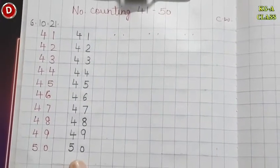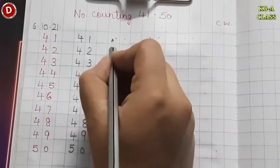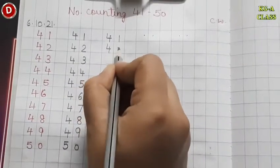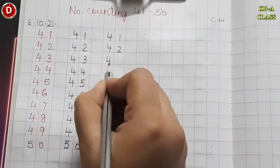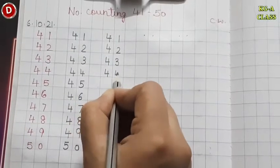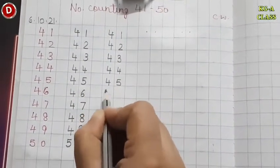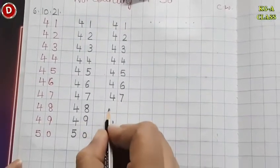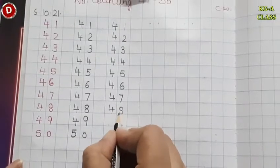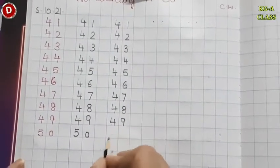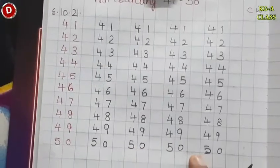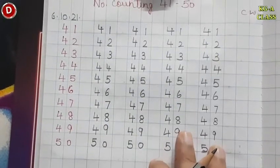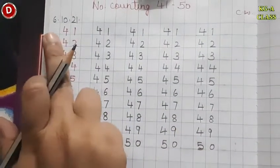See children, I have written it. Now I will leave the next line and write again — speak and write: 41, 42, 43, 44, 45, 46, 47, 48, 49, and here comes 50. In this way children, you have to write number counting 41 to 50 four times in your maths notebook along with today's date. The date is very important. Write it and send its picture to me.